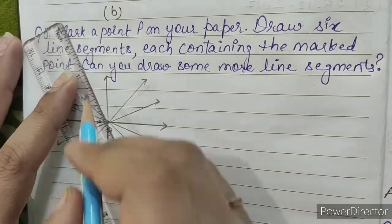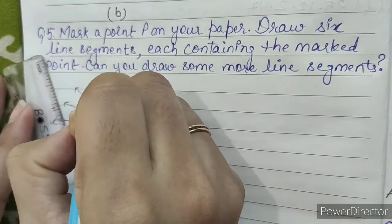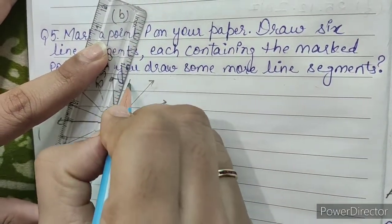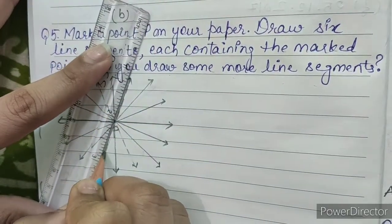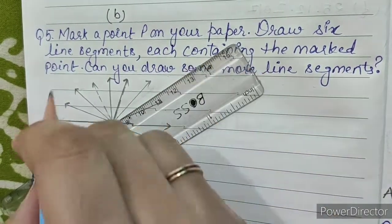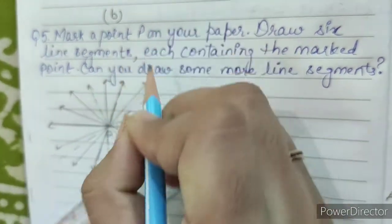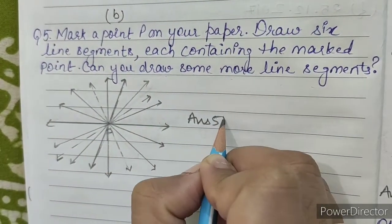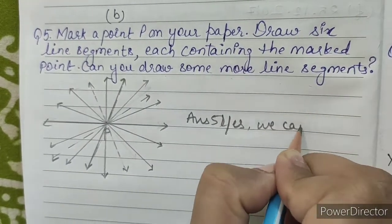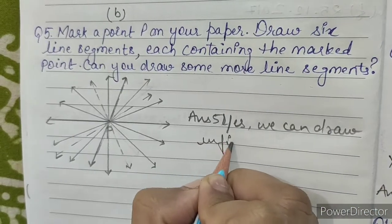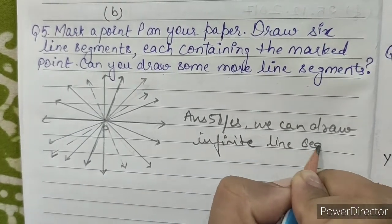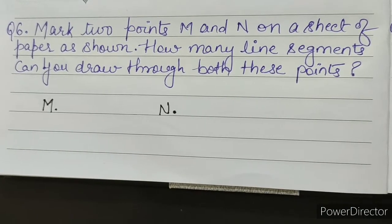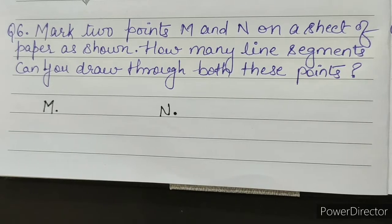We can draw more line segments: 1, 2, 3. So our answer is yes, we can draw 1, 2, 3, 4, 5, 6 or more line segments through point P.